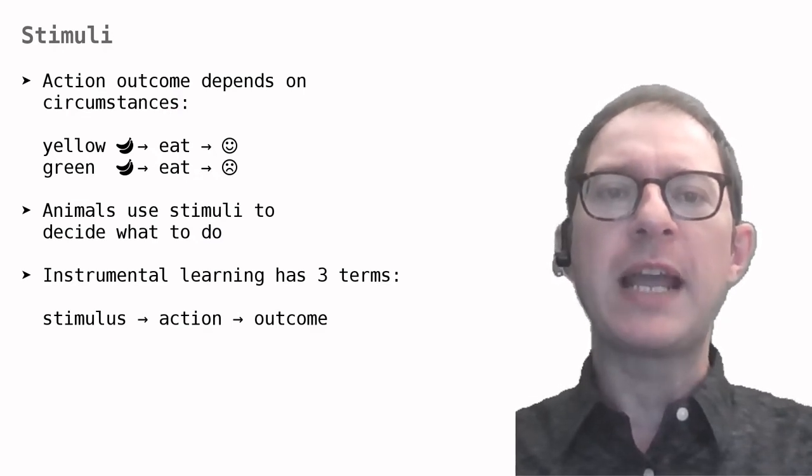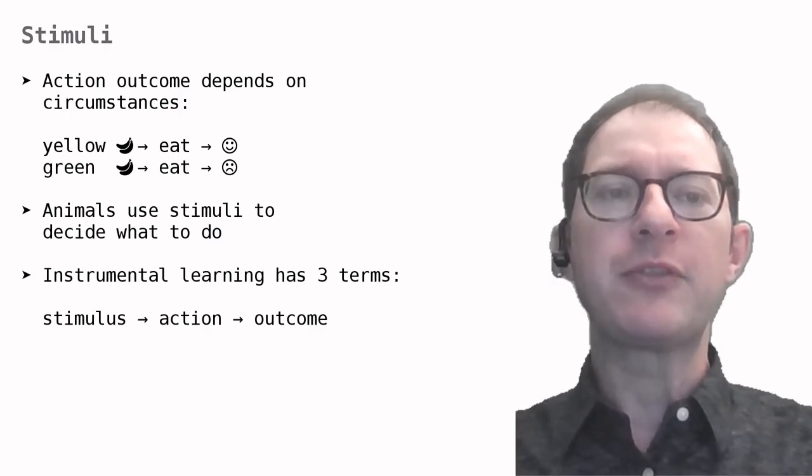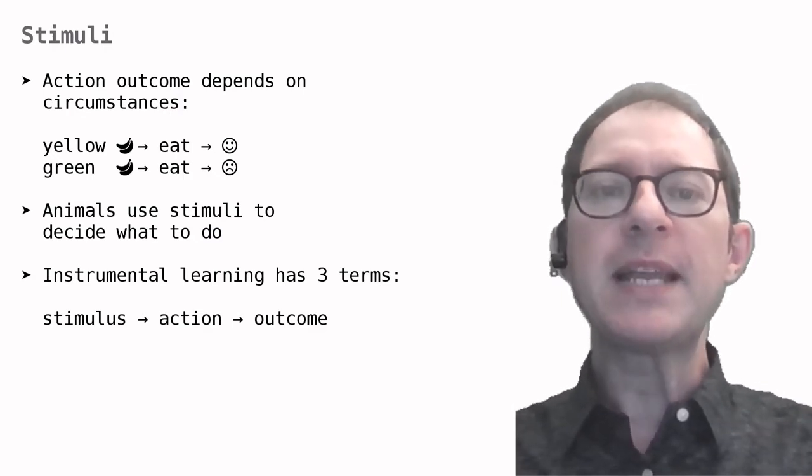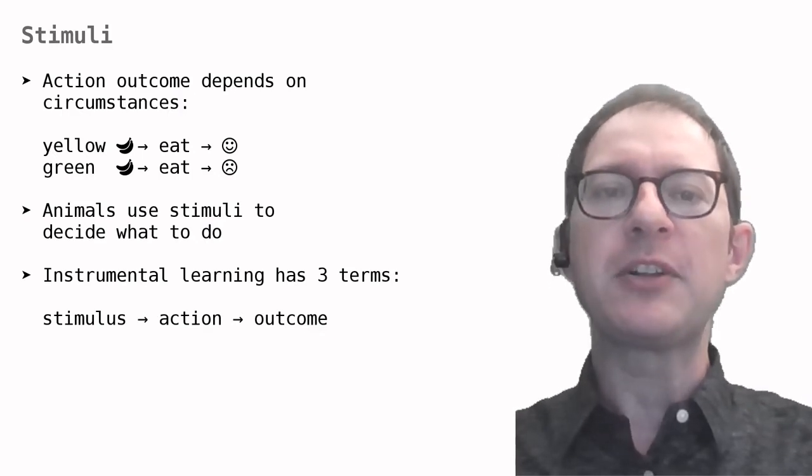So far, we have not said anything about how stimuli enter instrumental conditioning. Rather, we are focused on how an action is learned. Here, I just want to observe that the appropriate action depends on the situation. For example, we all learned that you can eat yellow bananas, but that green ones are not so great.